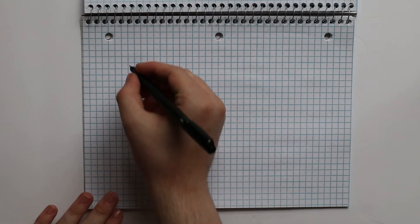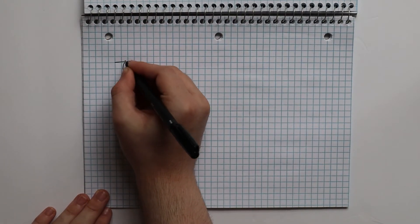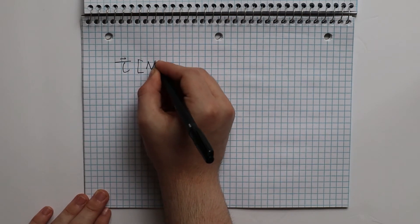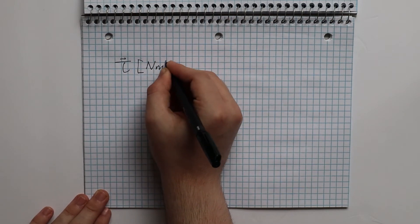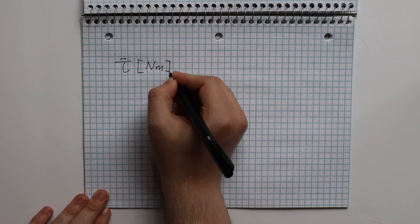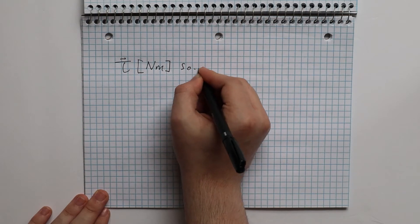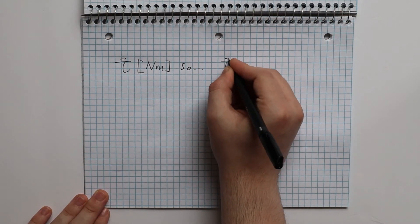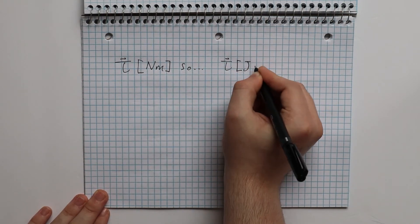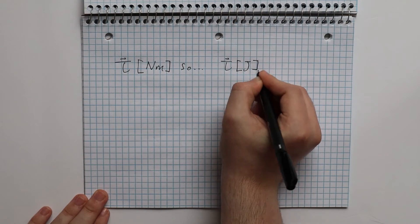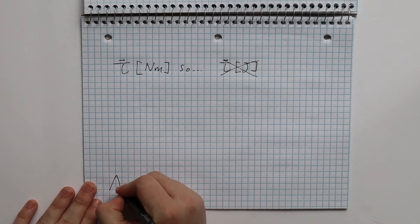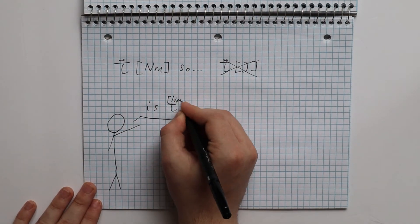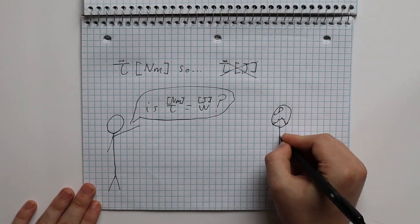Now this is where the strangeness begins. What are the units of torque? Looking at our formula, we get newton-meters, which is exactly the same as the units of work. So are the units of torque joules? Actually, no. If you ask any physics teacher, they will tell you that torque and work definitely don't have the same units — but why?